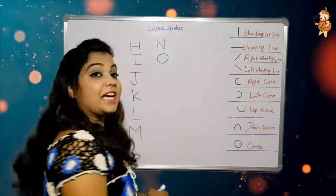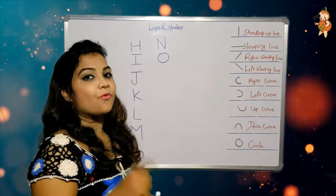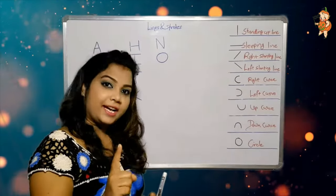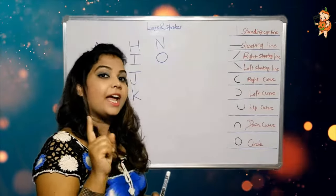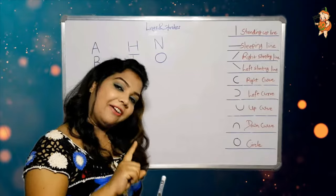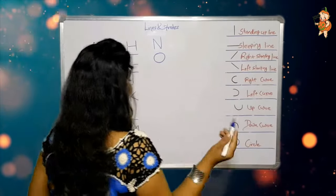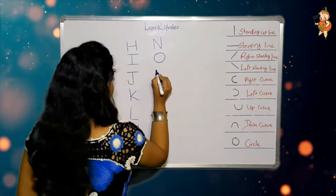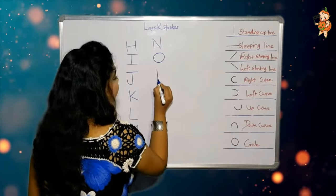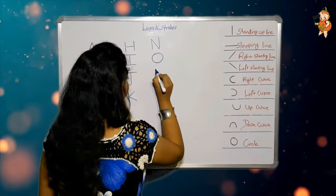Now it's time to make P — one standing up line and one left curve.